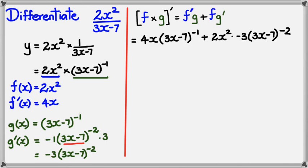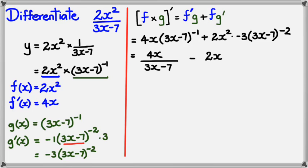Now I could leave the answer as it is, but I'm trying to derive the quotient rule formula. So I'll simplify: I've got 4x divided by 3x minus 7 minus 2x squared times 3 divided by 3x minus 7 squared.